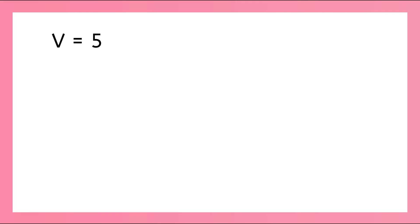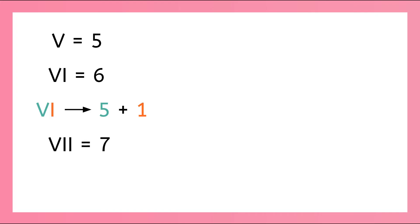Now let's start where we left off at 5. We know the symbol for 5 is V. Can you guess what the symbol for 6 is? It's just the opposite of 4 — the symbol for 6 is VI. When we have a symbol for a smaller number like I after a larger symbol like V for 5, that means we add. Using this rule, VII is 7, and VIII is 8.